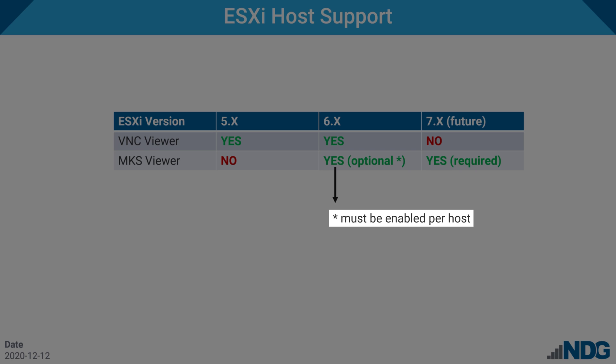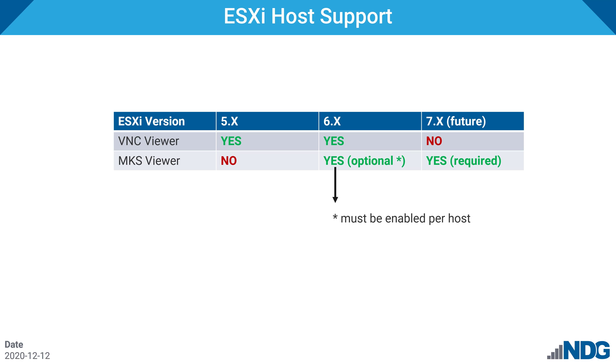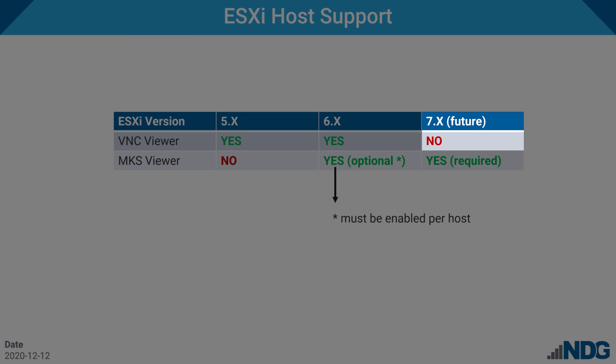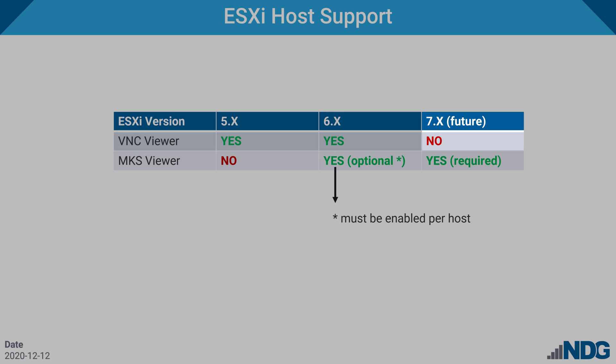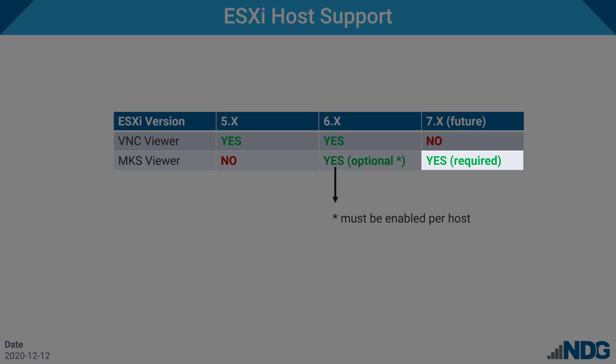You must do this per host. We'll demonstrate that a little later in the video. Starting with vSphere 7, VMware has removed the VNC protocol from ESXi. So if you're running a NetLab version before 21.1 and attempt to connect to an ESX 7 host, the VNC Viewer will not work. Starting with version 21.1, however, we will detect a VMware ESX 7 host and switch to the MKS Viewer. Keep in mind, at the time of the video, we're not fully supporting ESX 7 as we're still finishing up documentation.